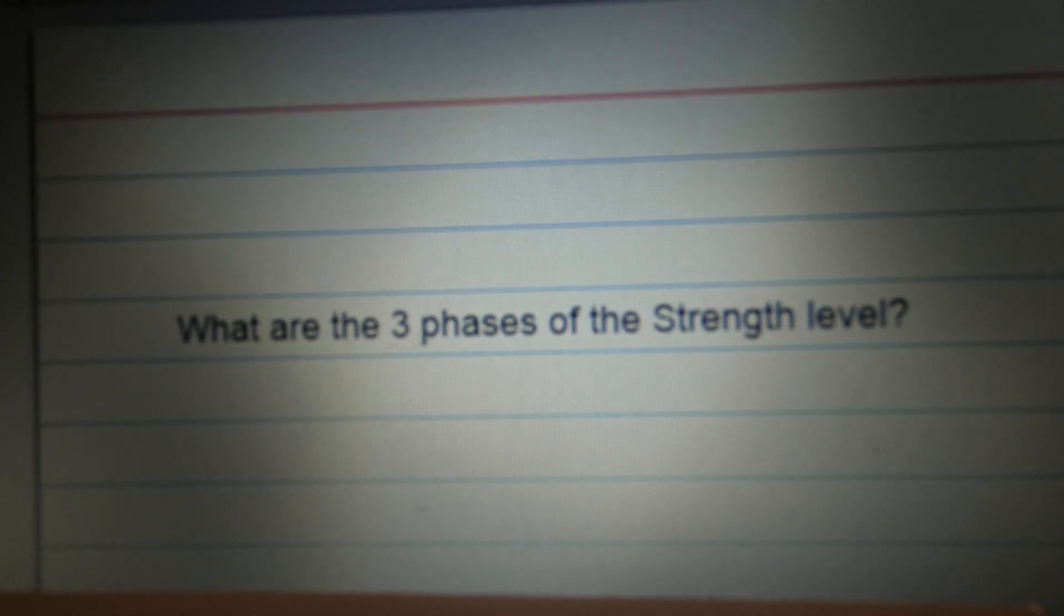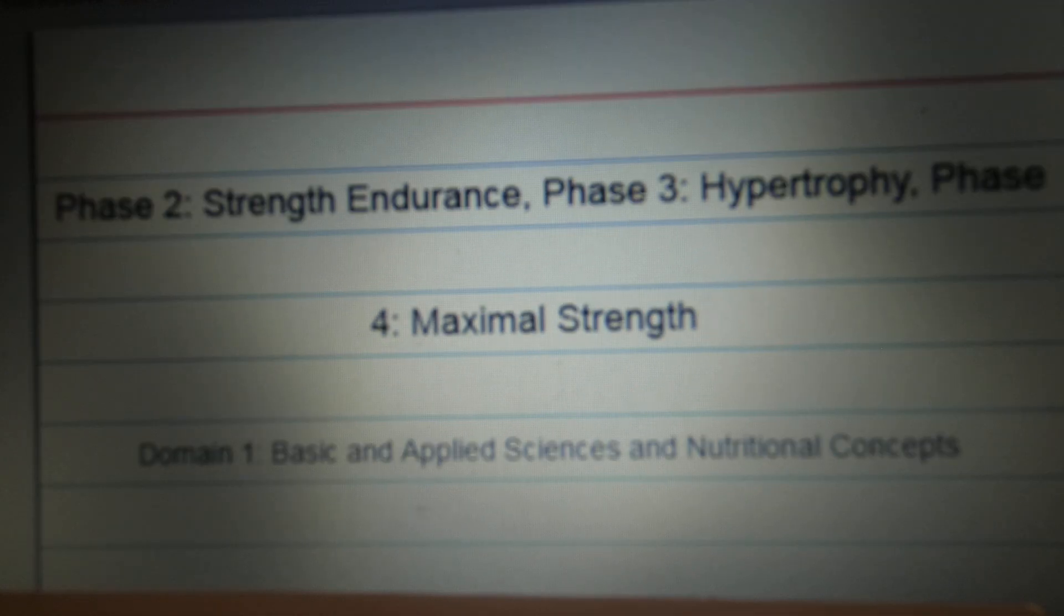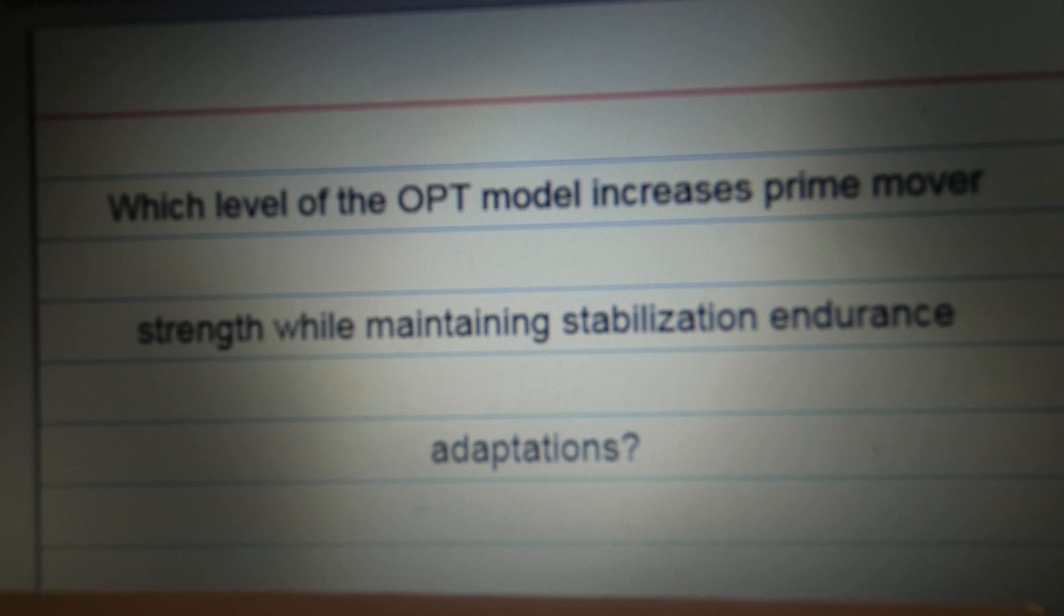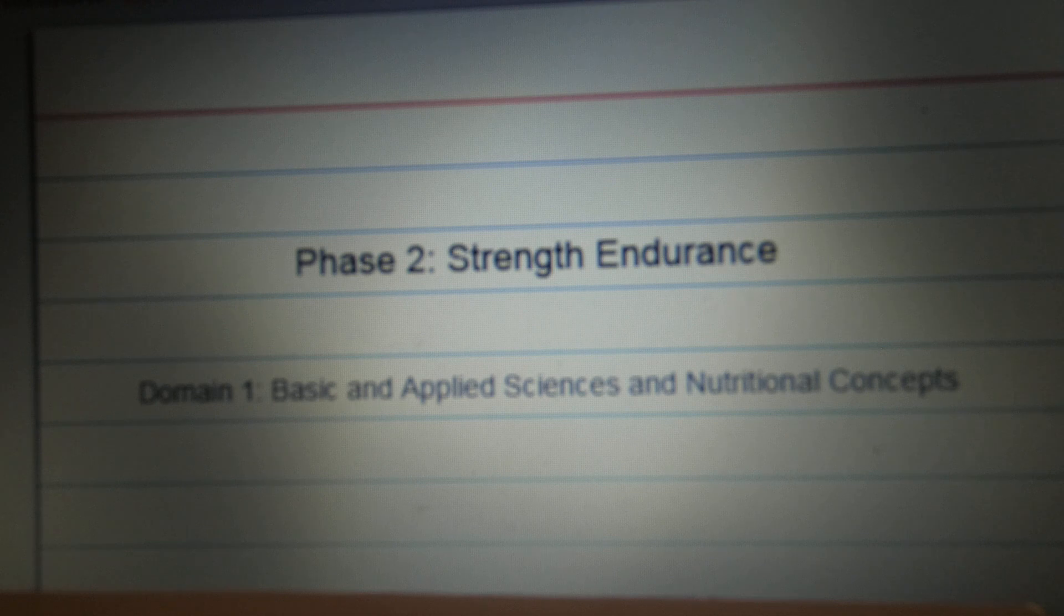What are the three phases of strength level? Phase 2, strength endurance. Phase 3, hypertrophy. I cannot say hypertrophy. Building the muscle, you know, growing it. Phase 4, maximal strength. Hypertrophy. There we go. Which level of the OPT model increases prime mover strength while maintaining stabilization endurance adaptations? Phase 2, strength endurance.